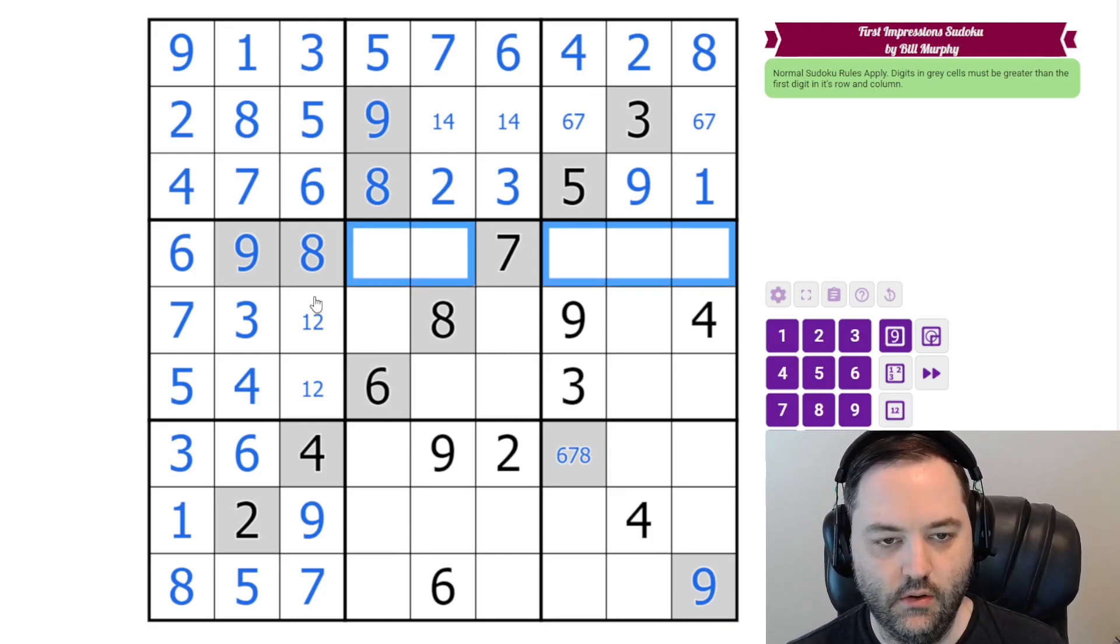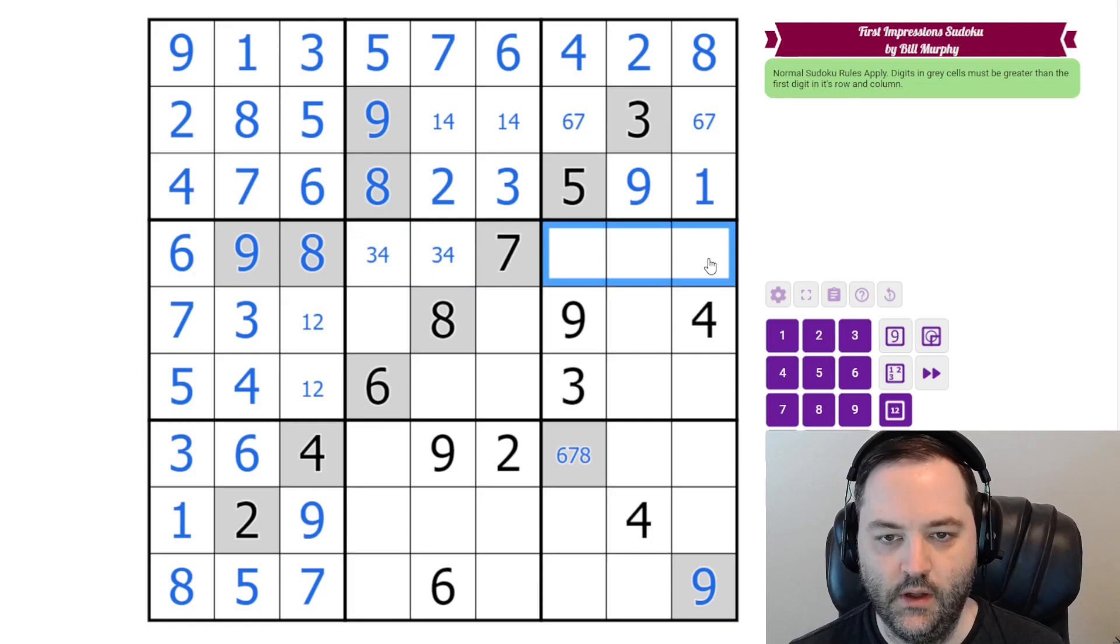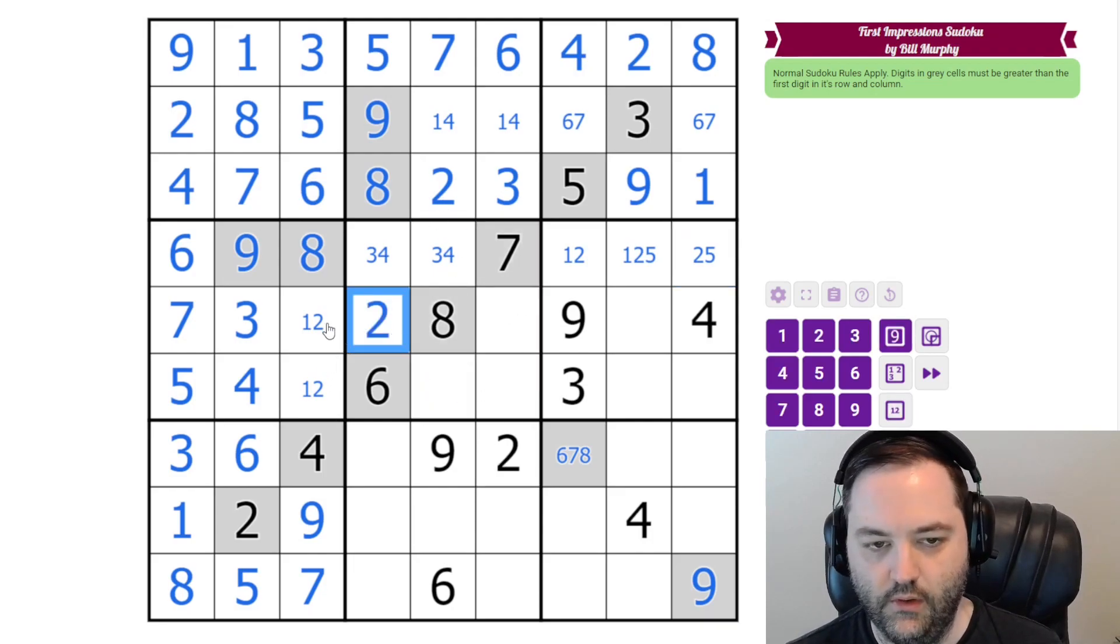Alright, let's look across here. We need 1, 2, 3, 4, 5. 3 and 4 can't go in this box, so they're going to have to go here. And then these are going to be 1, 2, and 5. Eliminate a little bit there. Now we still need a 2 in this box, and these 2 tells us it has to go there. That resolves 1 and 2.